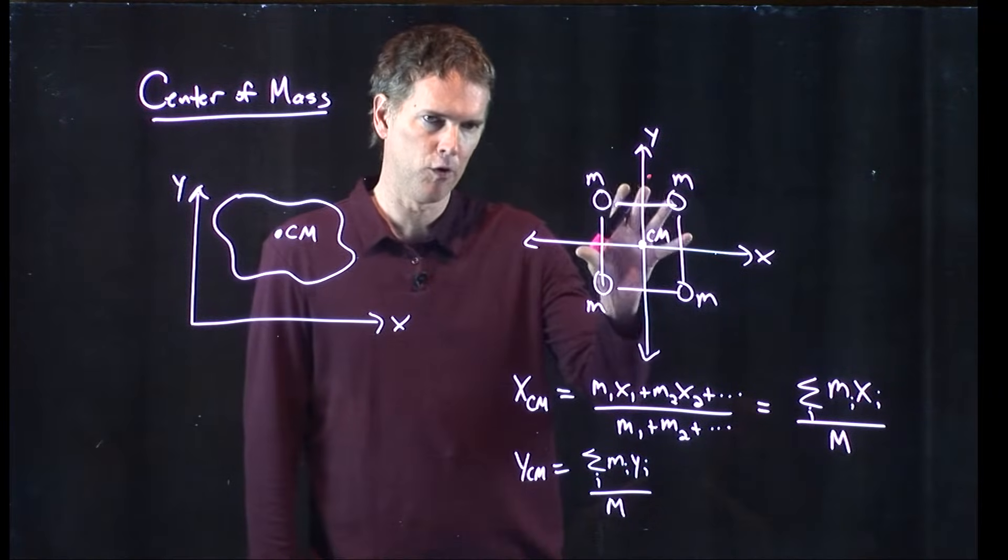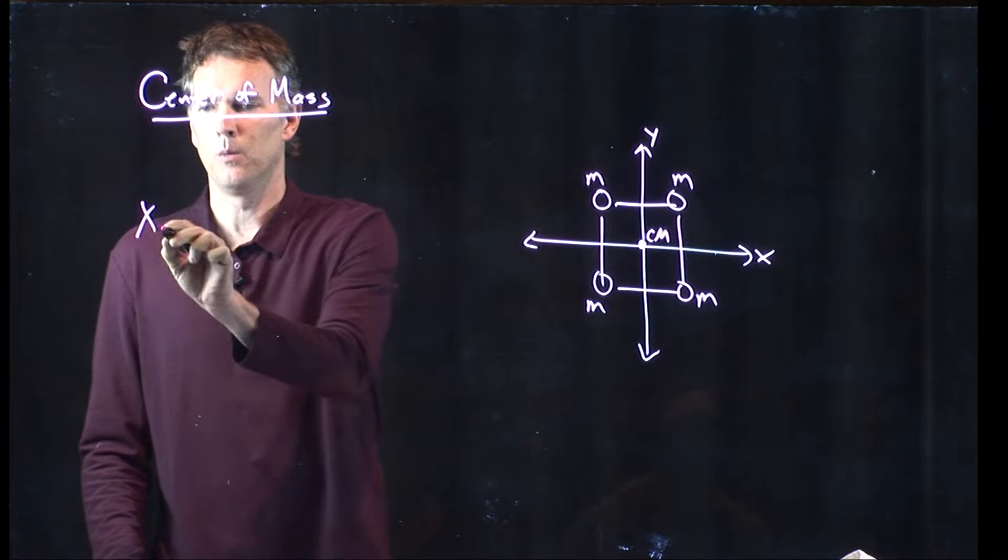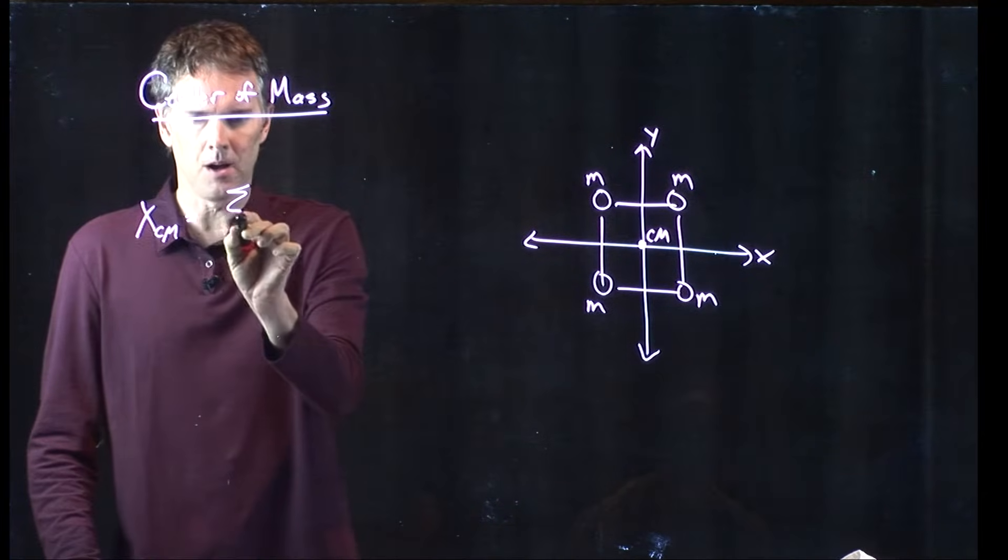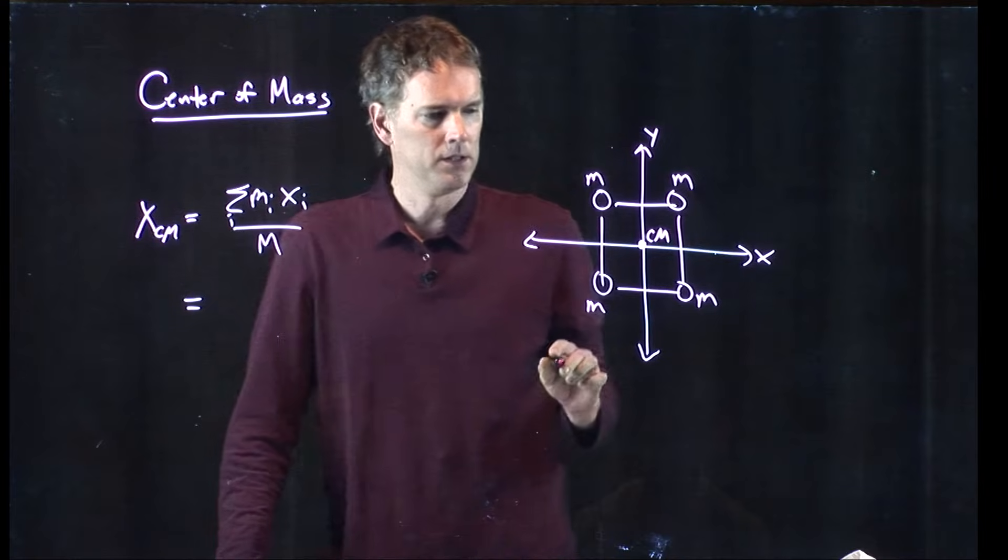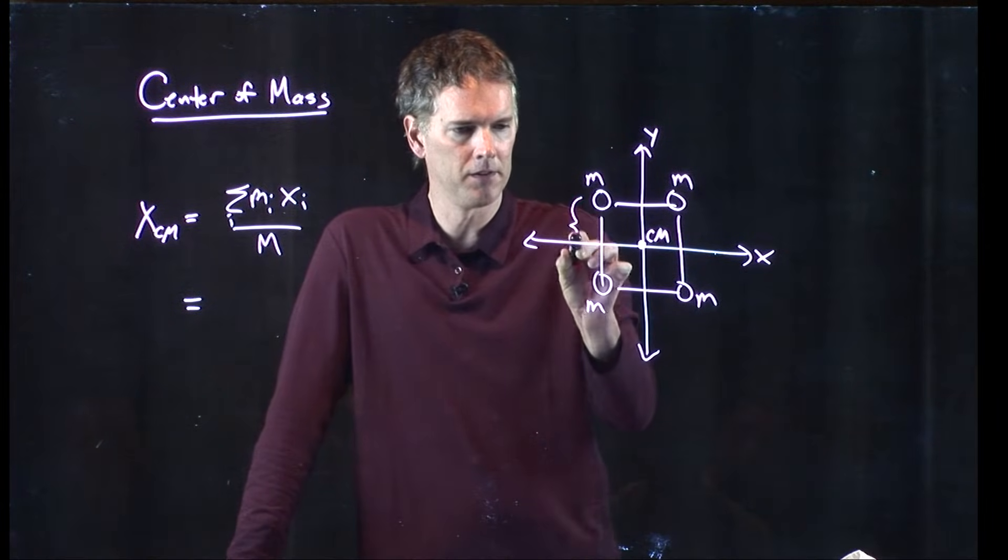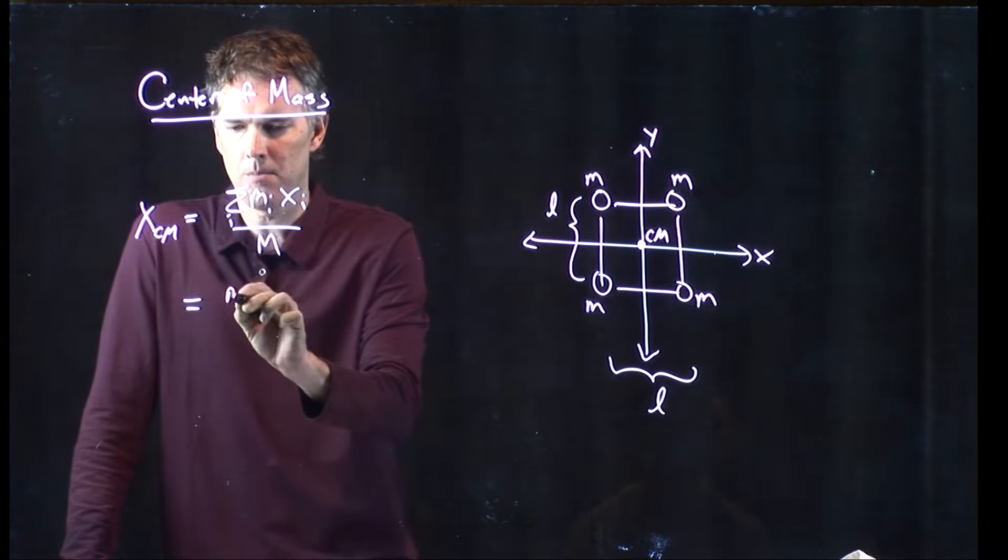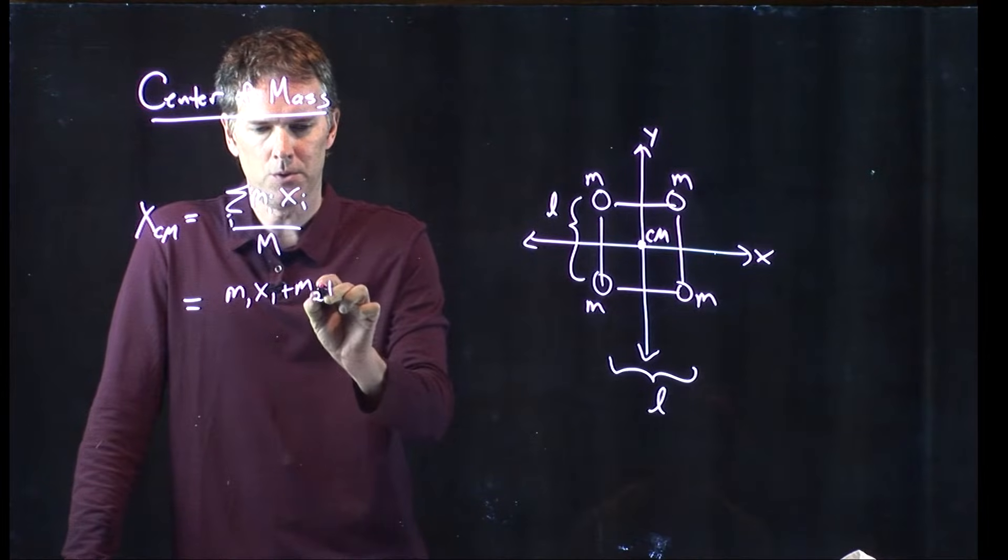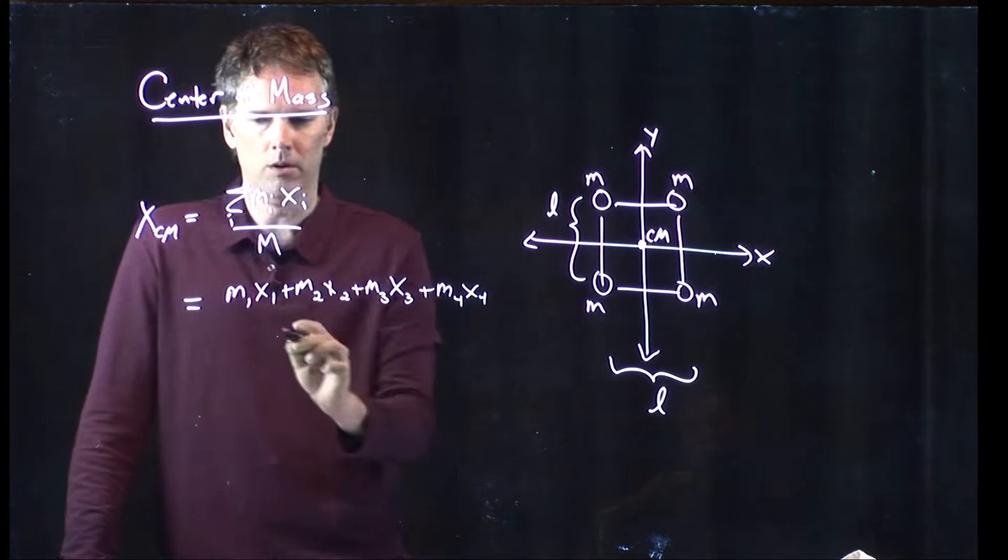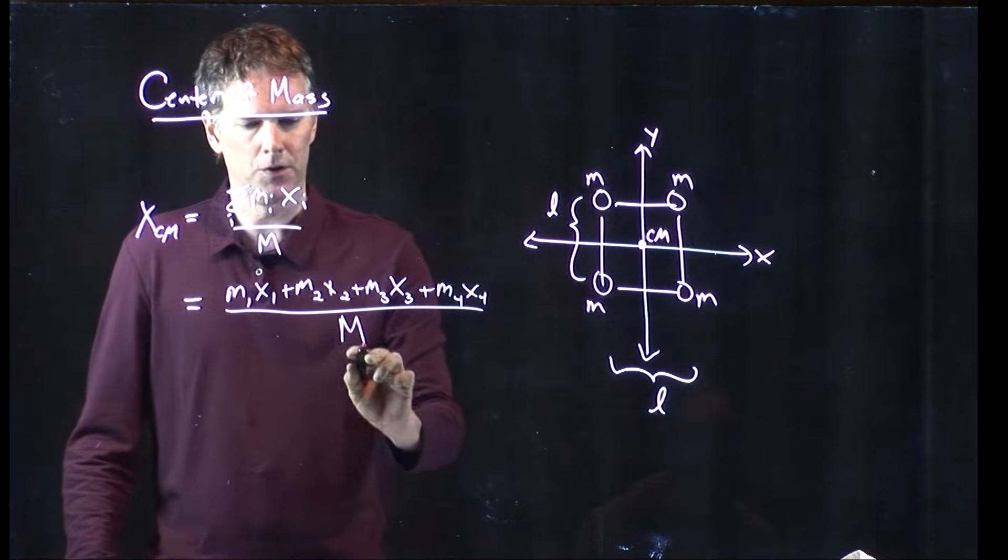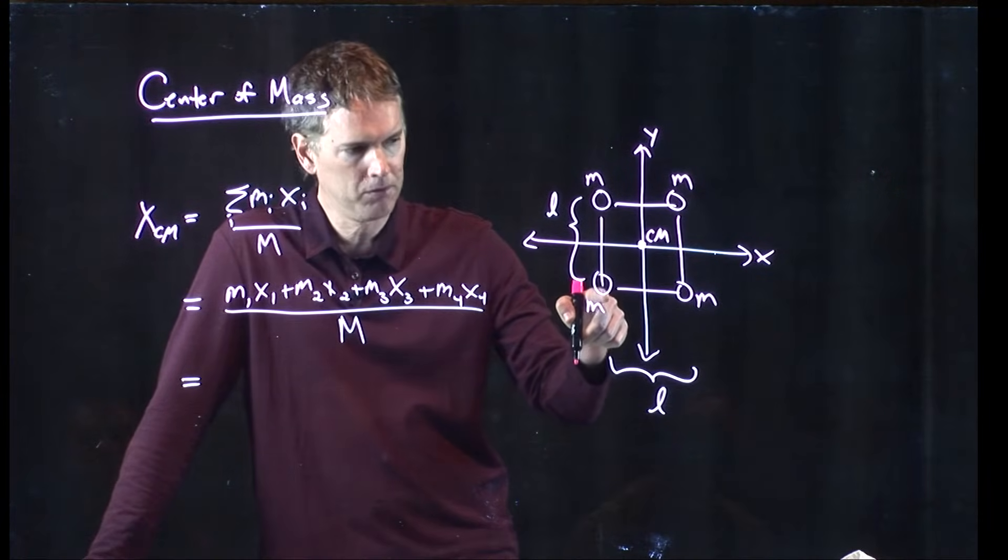All right. With that information, let's calculate it for this particular example and see if Travis was right. Here's our object. We said that the x position of the center of mass is the sum of m sub i x sub i divided by the total mass of the system. So, let's just start from right here. And let's say that each side of this square is L. So, we're going to have m1 x1 plus m2 x2 plus m3 x3 plus m4 x4. We have four particles and we're going to divide by the total mass.